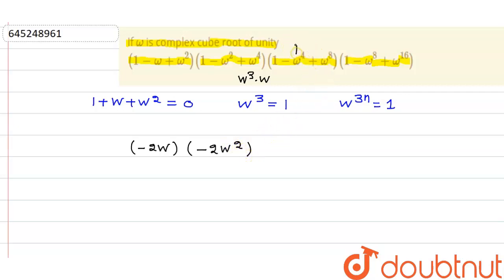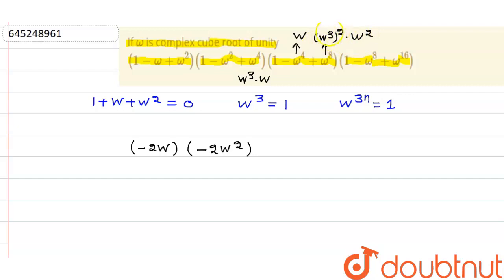Similarly, for the third factor: ω⁴ simplifies to ω and ω⁸ = ω⁶ · ω² = ω², since ω⁶ = 1. So the third factor 1 - ω⁴ + ω⁸ becomes 1 - ω + ω², and since 1 + ω² = -ω, this equals -2ω.